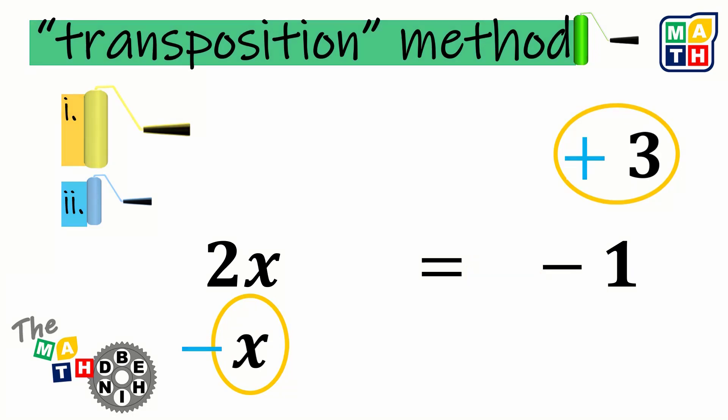With this method, we're able to isolate the terms with the variable to one side of the equation. And by finishing, we could come up with a result, which is x equals 2.